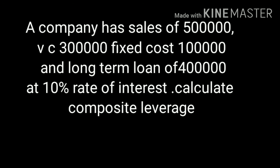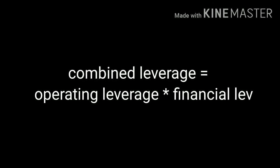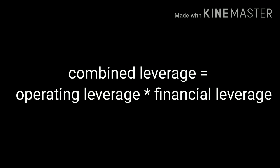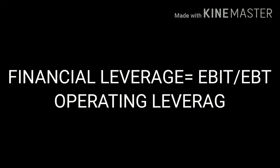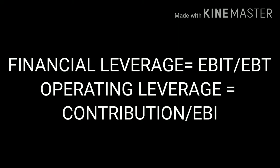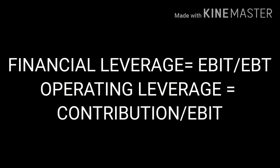Composite leverage is equal to financial leverage into operating leverage. Financial leverage is equal to EBIT divided by EBT. Operating leverage is equal to contribution divided by EBIT. EBIT means earnings before interest and tax, which is the operating profit of the firm.